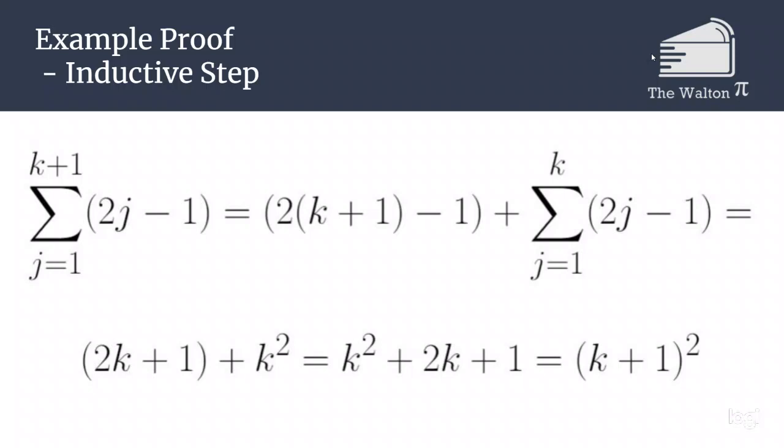Since the sum from 1 to k of 2j minus 1 is just k squared, we are left with k squared plus 2k plus 1, which is the same thing as k plus 1 squared.